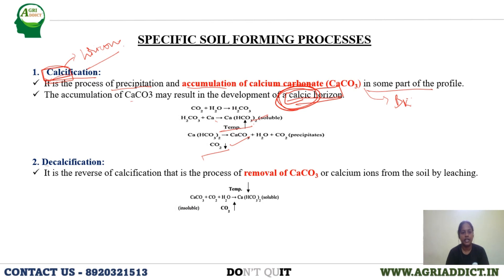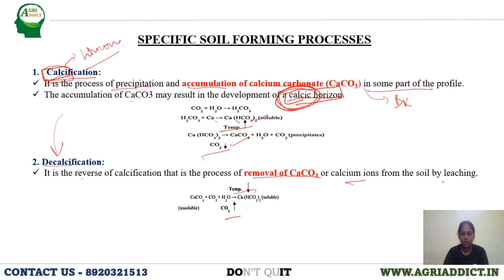Next is decalcification — the reverse of calcification. In this process, removal of calcium carbonate or calcium ions occurs from the soil. The factors will be opposite to those of calcification. Please remember, while studying factors affecting particular processes, don't try to memorize them by rote — try to understand the phenomena in depth, because exam statements may come in a twisted way.